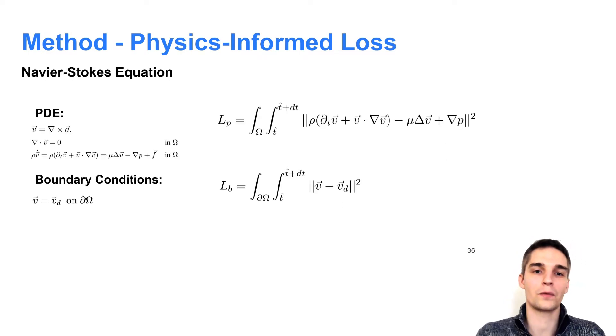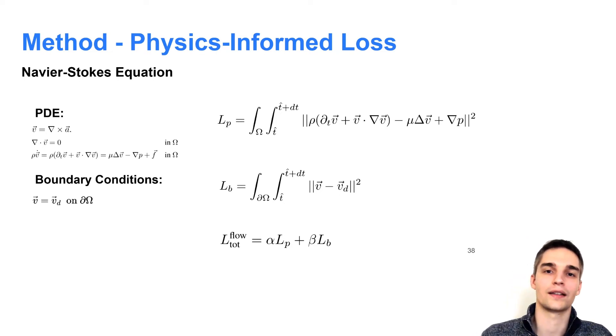For the Navier-Stokes equation, we can proceed similarly. As we are using a vector potential, the velocity field is automatically divergence-free, so we only have to care about the momentum equation. Since we have third-order derivatives of the vector potential due to the viscosity term, we need at least second-order Hermite splines for the vector potential in x and y to compute the momentum loss LP. Like for the wave equation, we compute a weighted sum of the momentum and boundary loss terms with hyper parameters alpha and beta to obtain the final loss term.